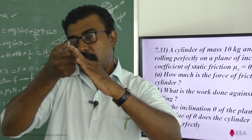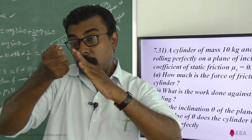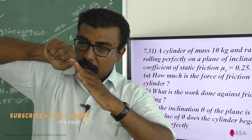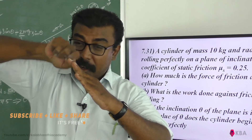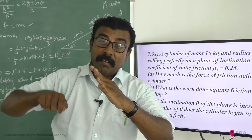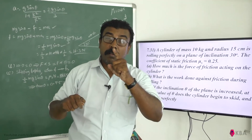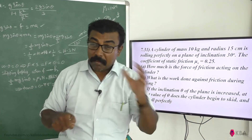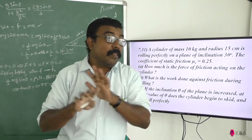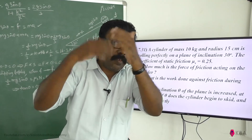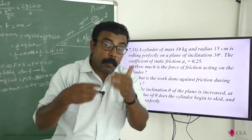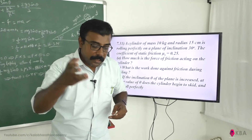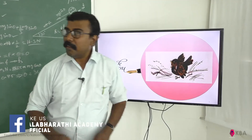At angles beyond 36.87°, friction is not sufficient to provide the torque needed for rolling motion and angular acceleration. As a result, the final translational velocity vf becomes greater than R times the final angular velocity ωf. Since vf is higher and R·ωf is lower, the ball begins to skid. This completes the analysis.